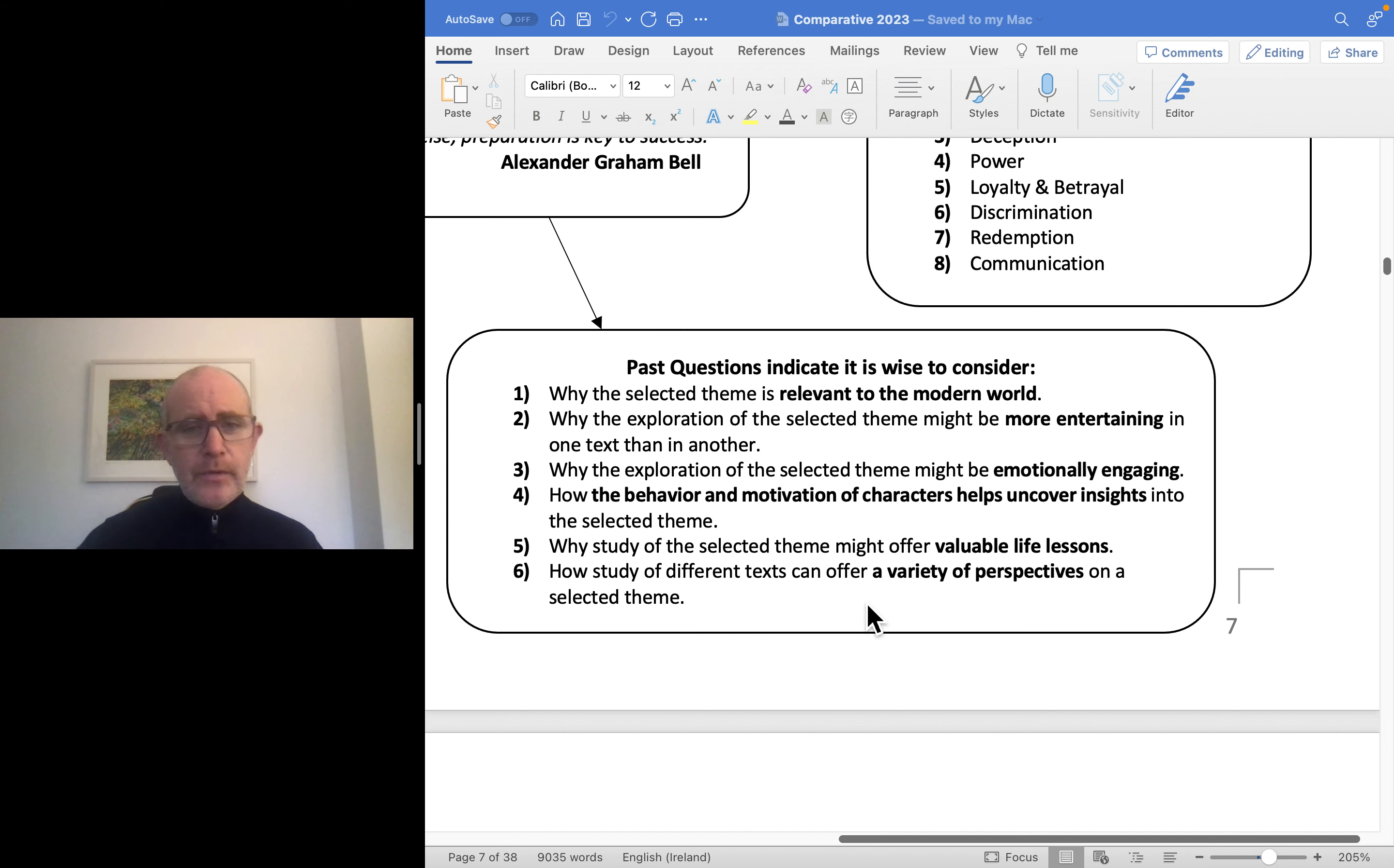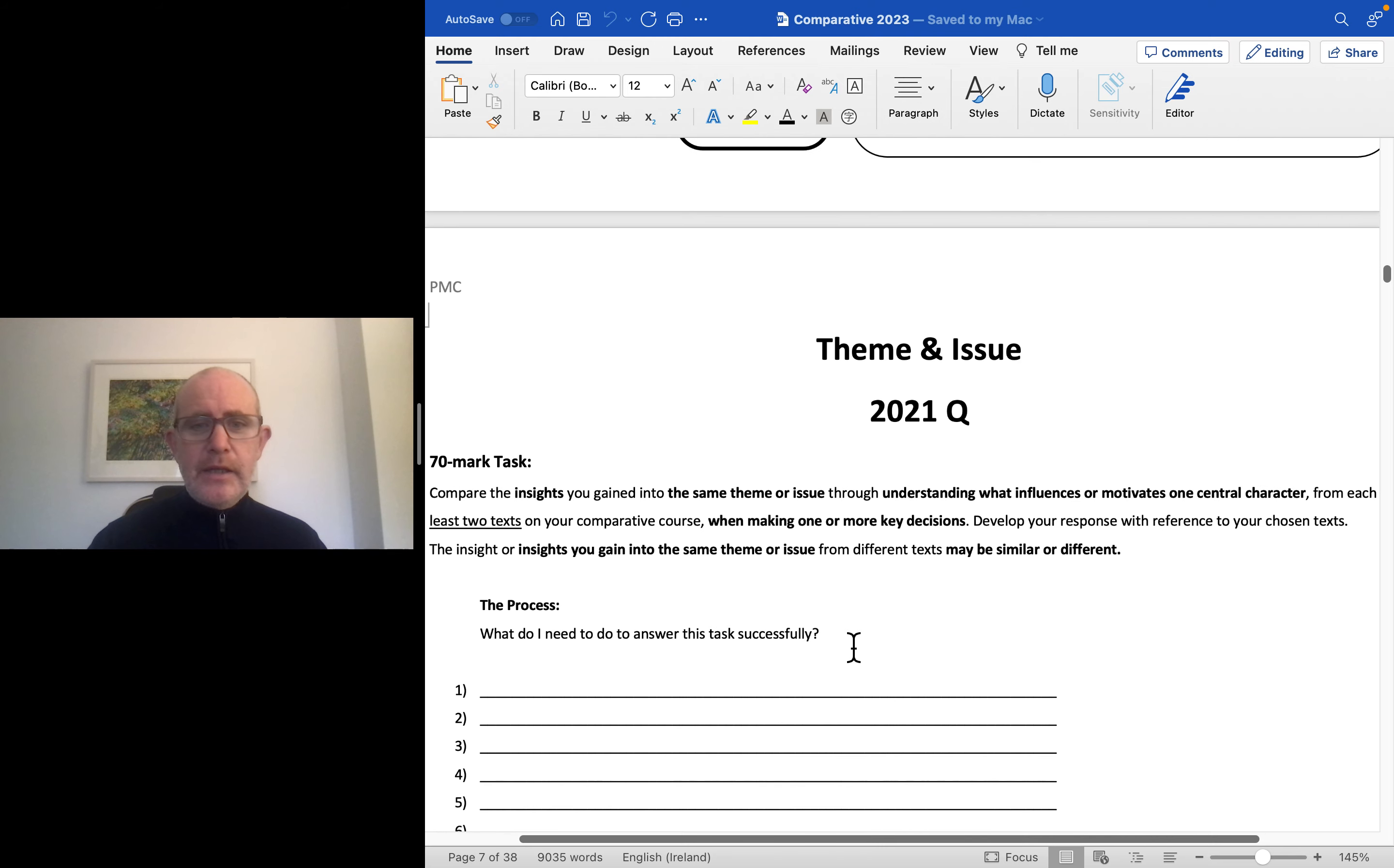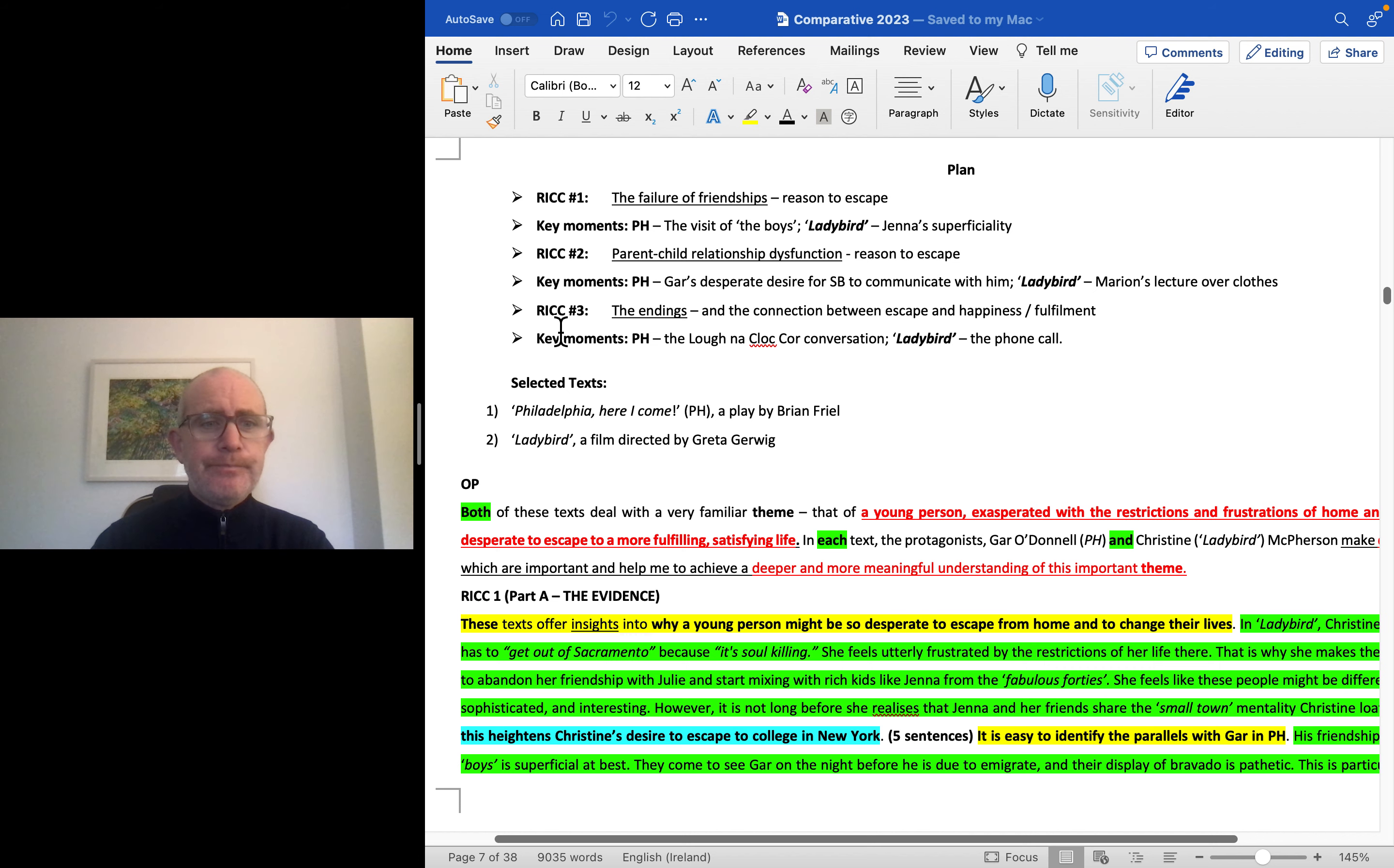Hopefully that'll give you better insight into what you need to be doing in terms of theme and issue. I'm going to follow up with a video - I'm going to stop this one now - in which I look at this question: Compare the insights you gained into the same theme or issue through understanding what influences or motivates one central character from at least two texts in your comparative course when making one key decision. With that one I'm going to refer to Philadelphia Here I Come and Ladybird, but that'll be at a later date. Thank you.